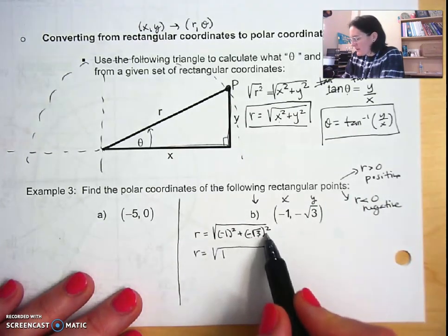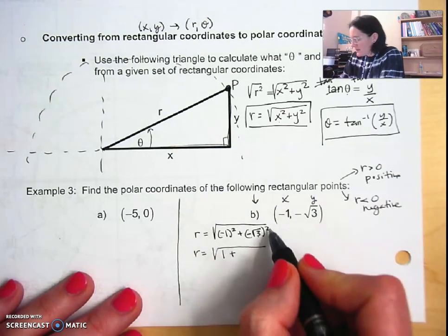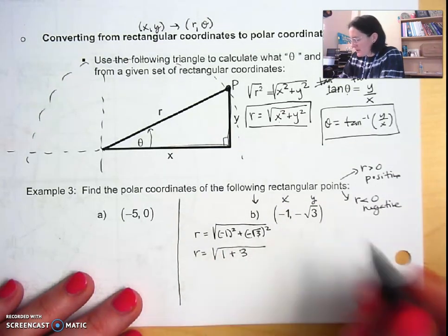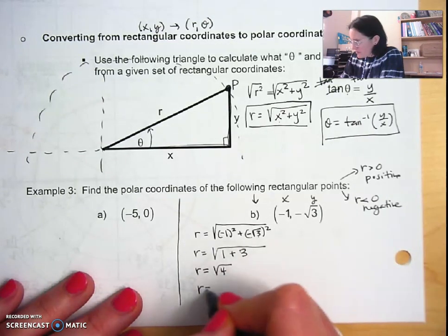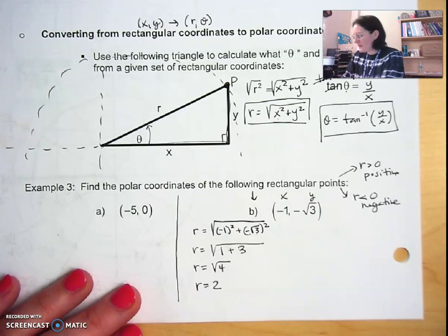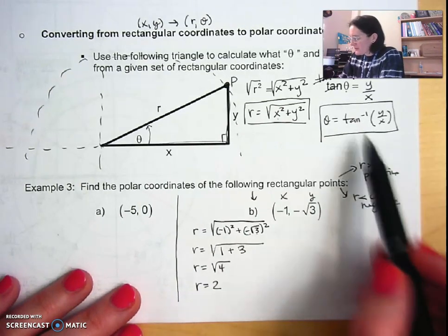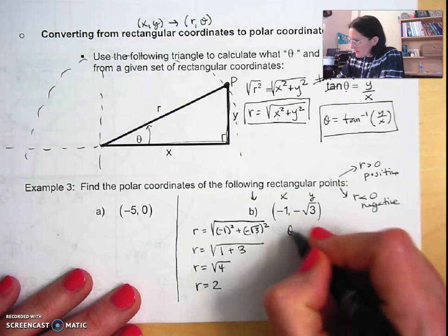Negative one squared means negative one times itself, the sign is positive, it's a positive one. Same thing here: negative rad three squared, negative times negative is positive, and square cancels out square root, leaving me three. That gives me square root of four, which is two. So I have my r value.